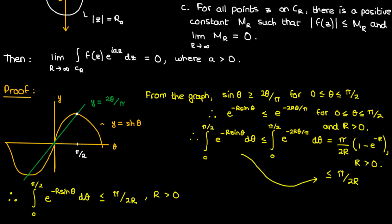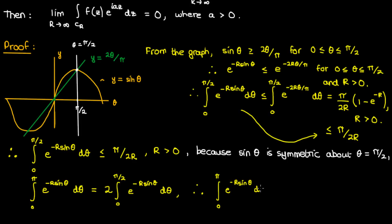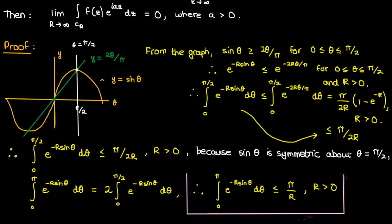Let's go back and look at the graph of sin θ. We can see that sin θ is symmetric when you reflect it about θ equals π/2. So the integral from 0 to π of the exponential of negative R·sin θ is twice the integral from 0 to π/2. Therefore the integral from 0 to π is less than or equal to π/R. This inequality actually has a name — it's called Jordan's inequality, and Jordan's inequality is what we will use to prove Jordan's lemma.